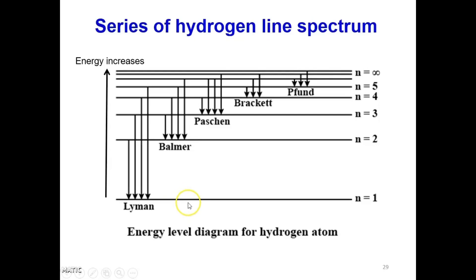Originally the electron is at the excited state. When it absorbs enough energy, it will excite to a higher energy level, which is the excited state. Since the excited state is unstable, it will fall to a lower energy level — not necessarily directly to N equals to 1. This gives rise to different emission series. For example, the Lyman series is where electrons from different excited states fall to N equals to 1. The Balmer series is where electrons fall to N equals to 2. The Paschen series is where electrons fall to N equals to 3. The Brackett series is where electrons transition to N equals to 4, and the Pfund series has N equals to 5 as the final energy level.